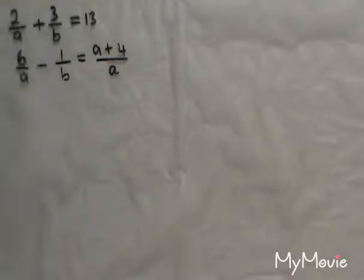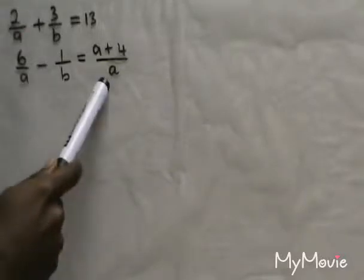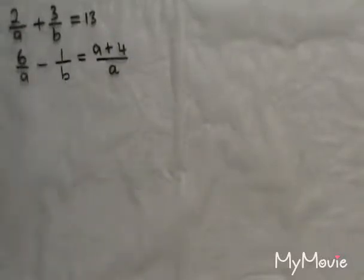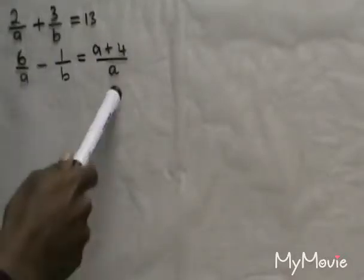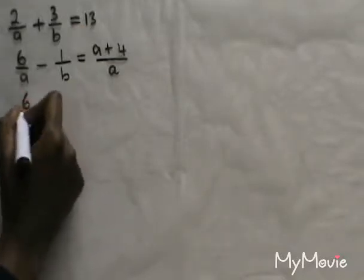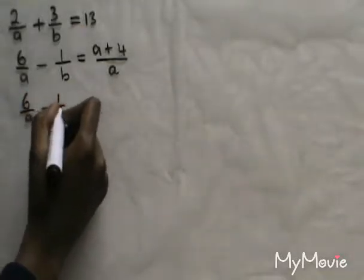First thing you need to do, just like with Kramer's rule, you need to have all your variables on one side and your constants on the other side. The first equation is already like that, with variables A and B on that side, but in the second equation I have some variables on the other side. This one here is a fraction with denominator A, so I can break it up into two separate fractions — I'll have 6 over A minus 1 over B.